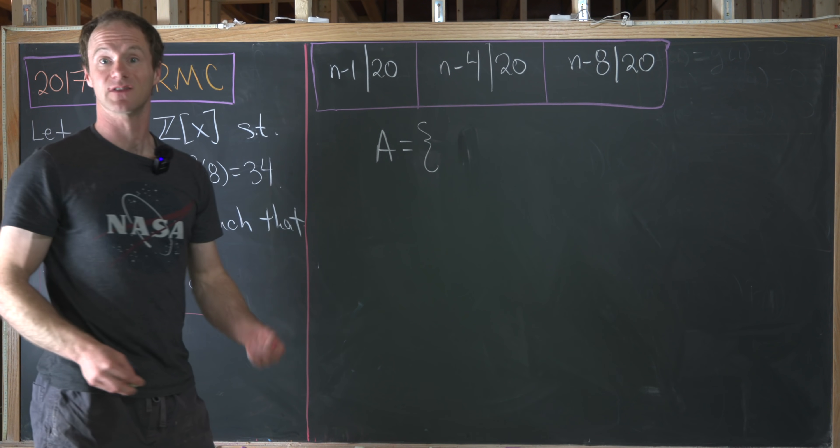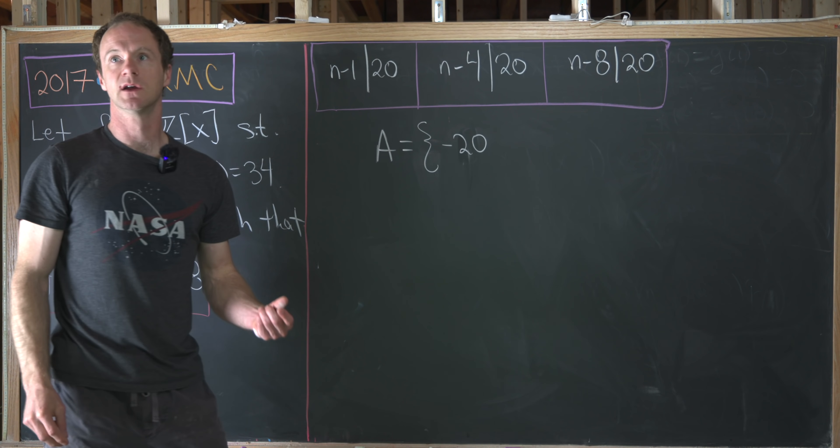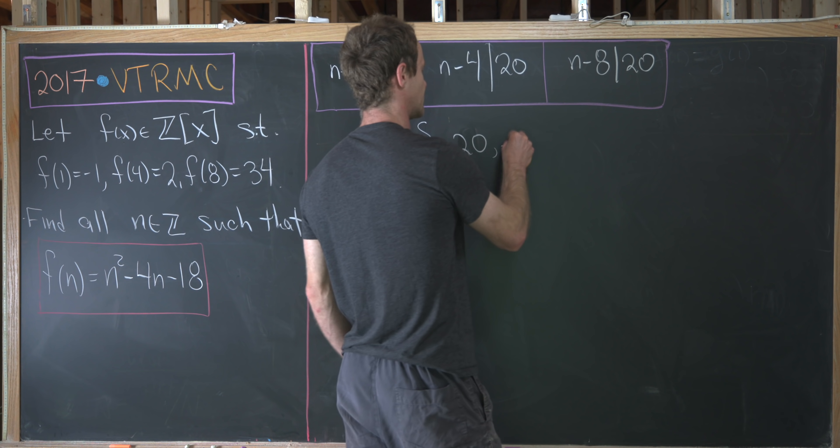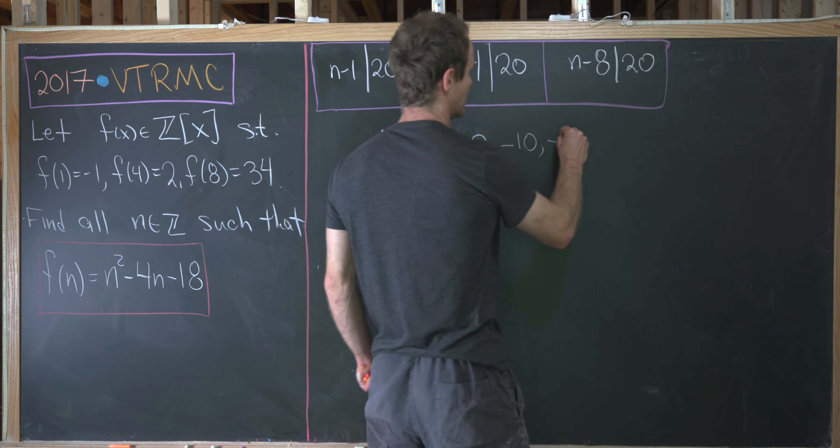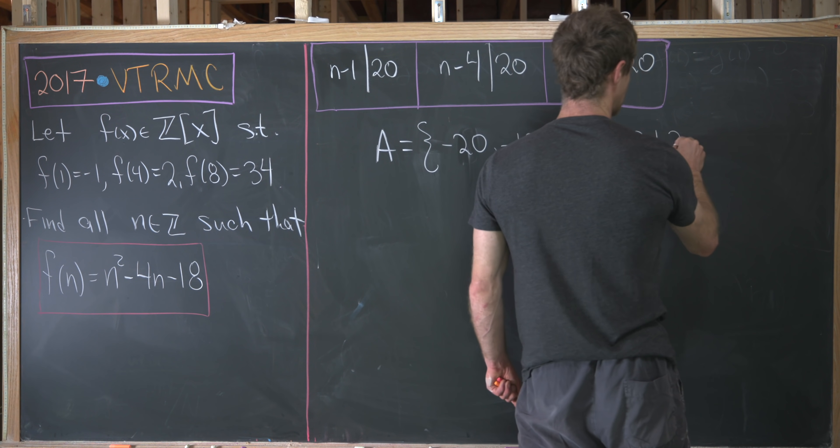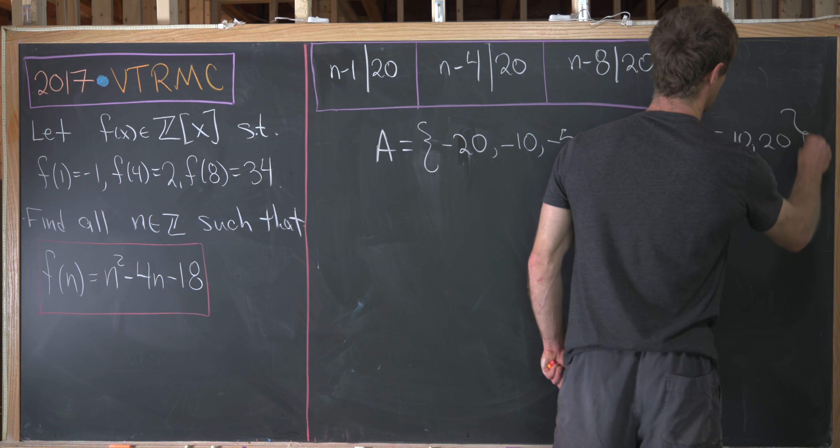We can start at the lowest end as minus 20. So notice that divides 20 with a multiplicative factor of minus 1. And then next, we have minus 10, minus 5, minus 4, minus 2, 1. And then finally, 2, 4, 5, 10, and 20. So all of those are the divisors of 20.